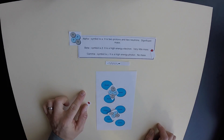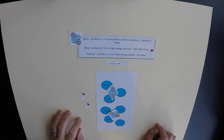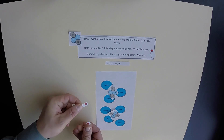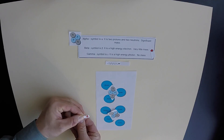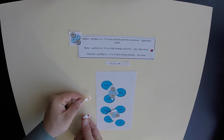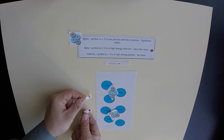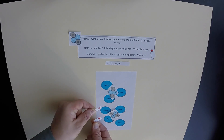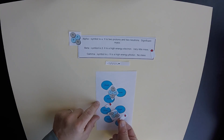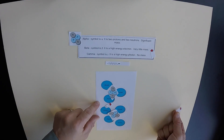The beta particles are smaller and have a lot of energy, so as they're moving they may not be blocked by this not-very-dense substance. Beta particles do not interact with matter very readily. One might get absorbed, but the other will pass right through that substance.